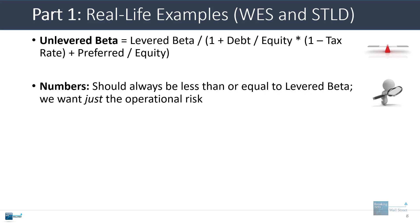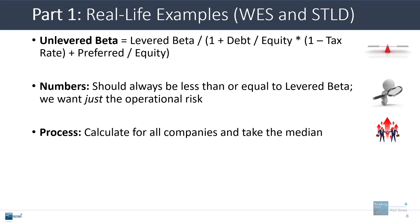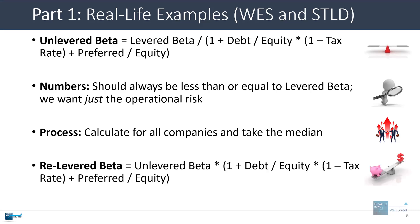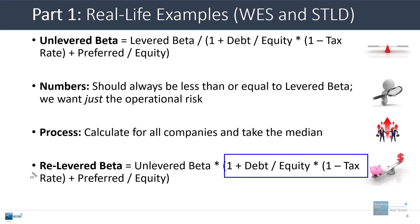Unlevered beta should always be less than or equal to levered beta because you're removing the financial risk and keeping just the operational risk. You calculate this for all the comparable companies, take the median, and then relever it by doing the opposite — taking the unlevered beta and multiplying by one plus the debt-to-equity ratio times one minus the tax rate plus the preferred-to-equity ratio.